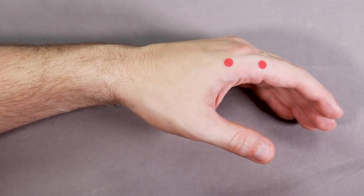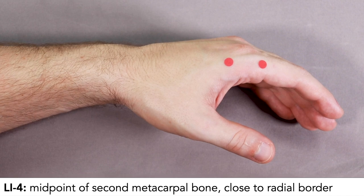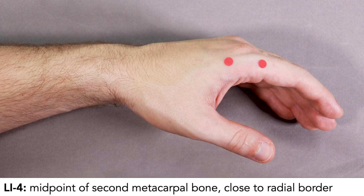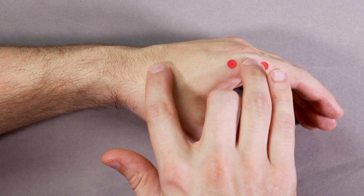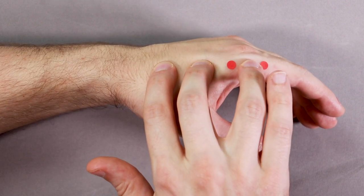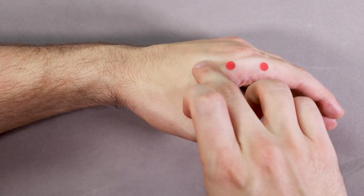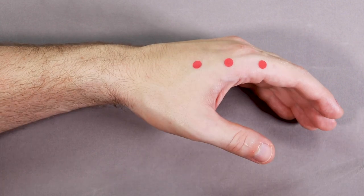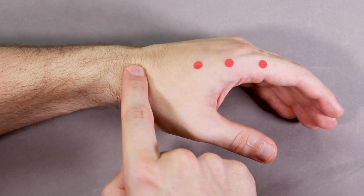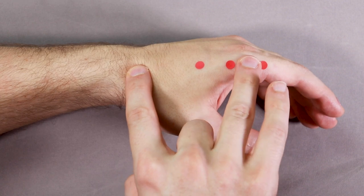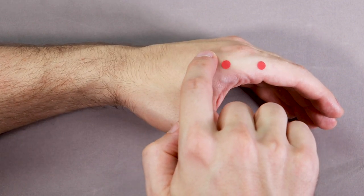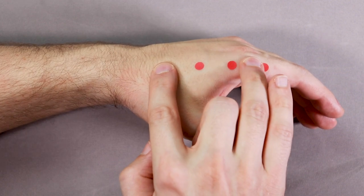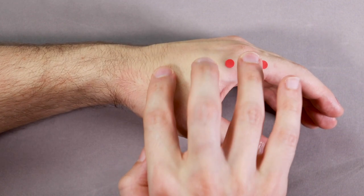LI4 is an important point, so we want to make sure we're locating it correctly. LI4 is located at the midpoint of the second metacarpal bone close to the radial border of the bone. So find the head of the bone, the base of the bone, and then come halfway for LI4.